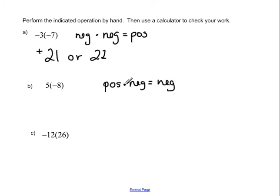So remember, this is positive times a negative. Positive times negative is negative. 5 times 8, we know the answer is 40. So my final answer would be negative 40.